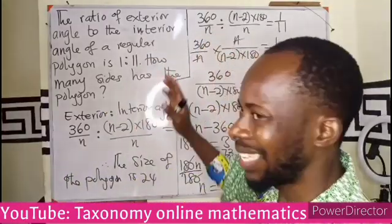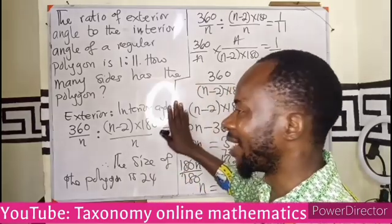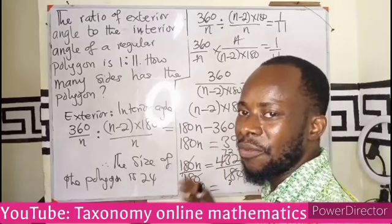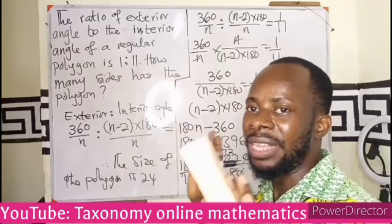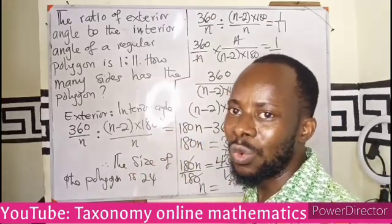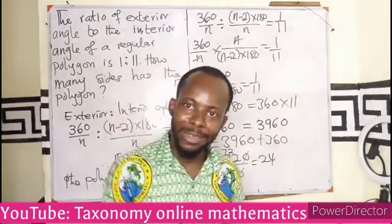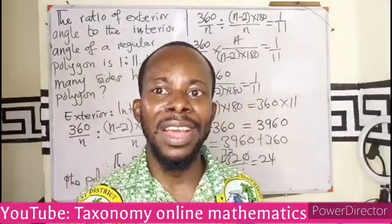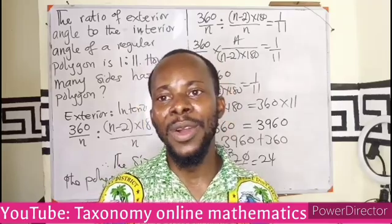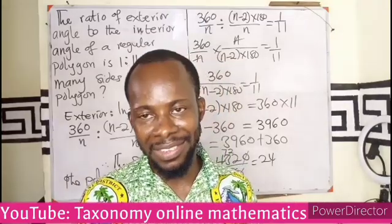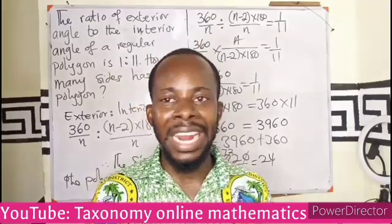So 24 sides — that's how many sides you need for the exterior angle to be in a ratio of 1 to 11 with the interior angle. This question combines ratio and proportion with polygon formulas. You must know the four formulas: exterior angle, interior angle, sum of exterior, and sum of interior. Take a question on your own, follow this procedure, and you'll master it. See you in the next episode — this is Tazunomi Online Mathematics. Please like, share, and leave a comment.